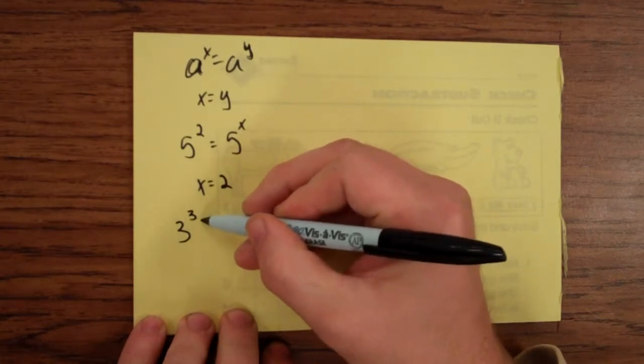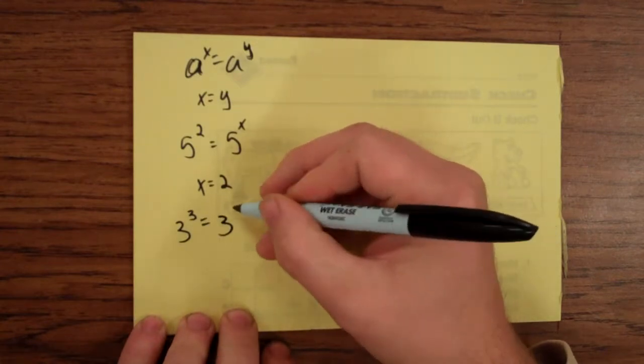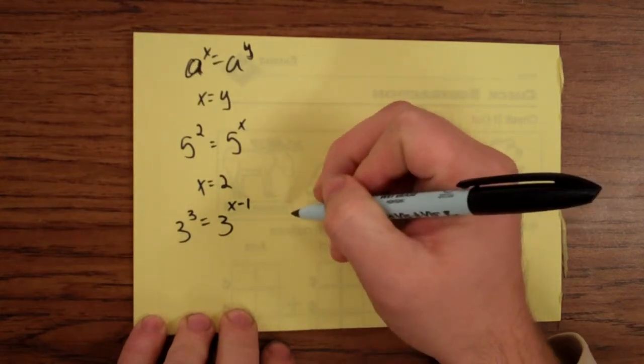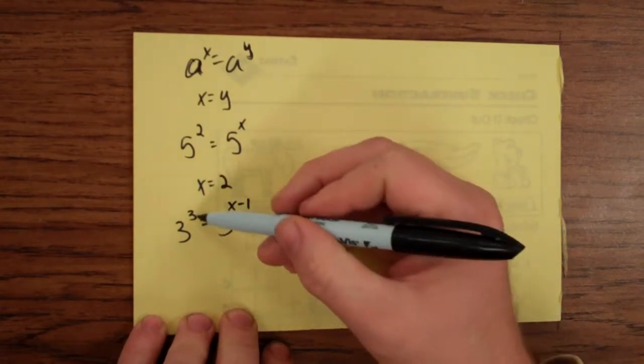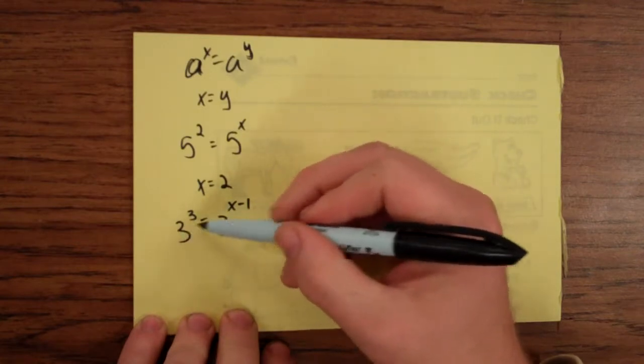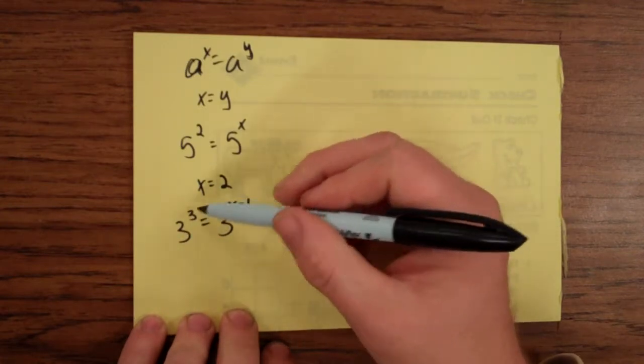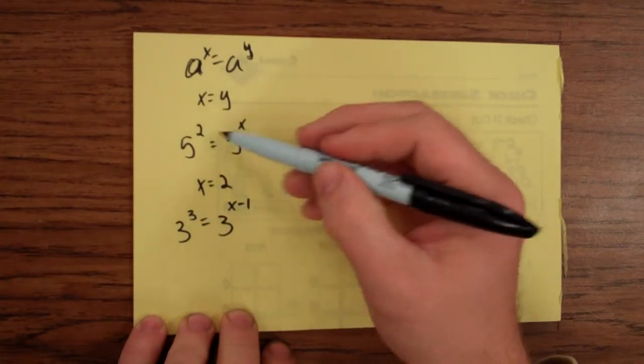Taking a little bit further, as 3 is to the third and it's equal to 3 to the x minus 1, then we've got 3 and 3. The bases of the exponents are the same. So the only thing that makes sense is that these exponents would be the same, just like up here.